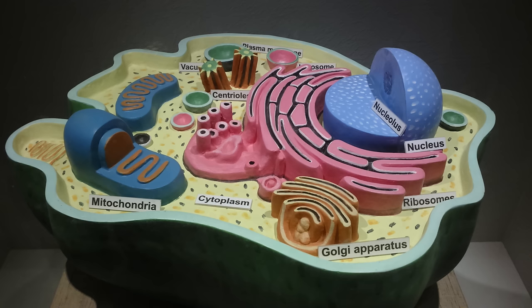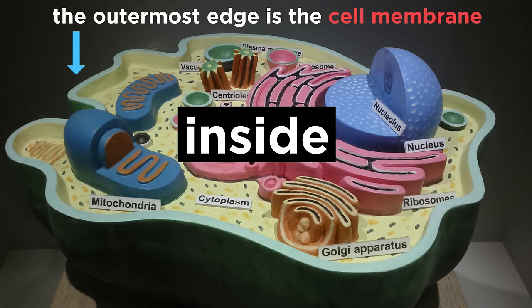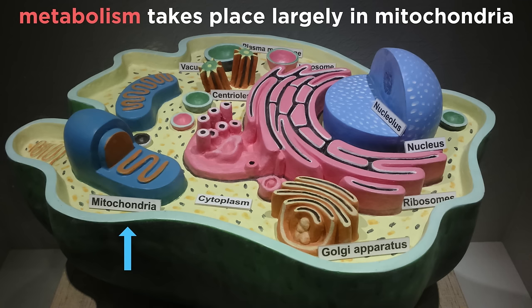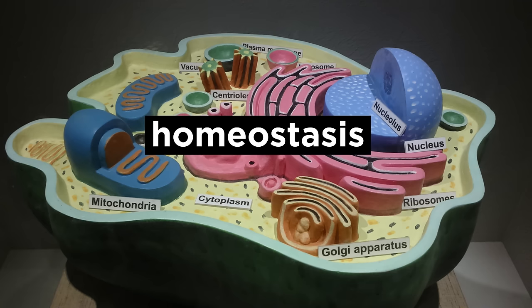One key feature of a cell is the cell membrane, or plasma membrane, which separates what's inside the cell from what's outside of the cell. This is a very important function because without this separation there could be no such thing as life, because an organism must be distinct from its surroundings. Inside a cell is where metabolism takes place and genetic information is stored under regulated conditions, or homeostasis.